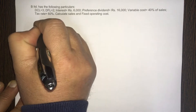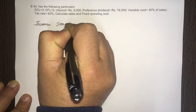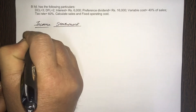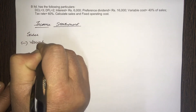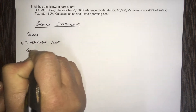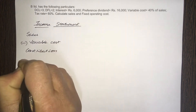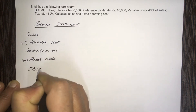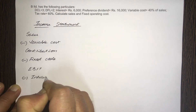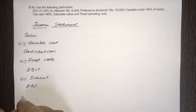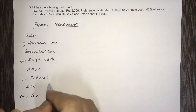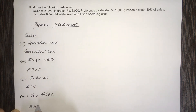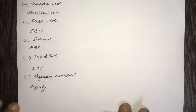First things first — the income statement: sales minus variable costs gives you contribution. Contribution minus fixed operating costs gives you operating profit or EBIT, earnings before interest and tax. EBIT minus interest payment gives you EBT, earnings before tax. Then deduct tax — the tax rate is given at 60% — and you get EAT, earnings after tax. Then minus preference dividend, and finally you have equity earnings.